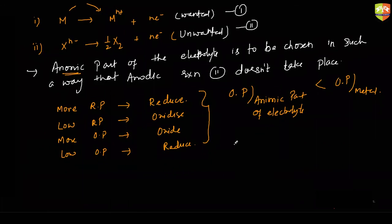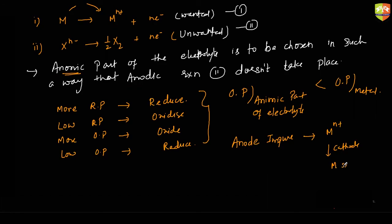The anode is impure. From this anode, the first reaction takes place: we get M^(n+), the metal ion. This metal ion gets reduced at cathode and converts into M solid — pure metal. The condition is: the oxidation potential of the anionic part must be lesser than the oxidation potential of the metal.